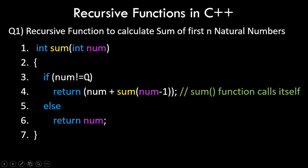Inside the function, if num is not equal to zero, we return num plus sum of num minus one. You can see the sum function being called inside itself — this is the recursive call — with an argument one less than the current number. If num equals zero, we return zero. This if-else condition is what prevents the infinite recursion scenario.